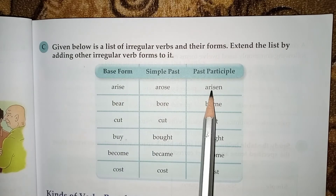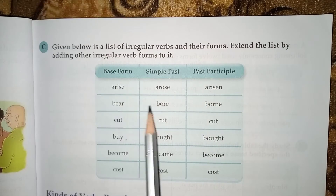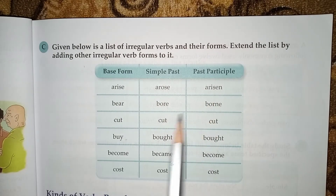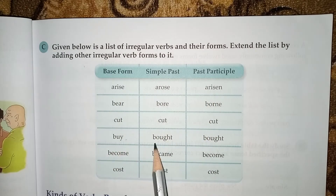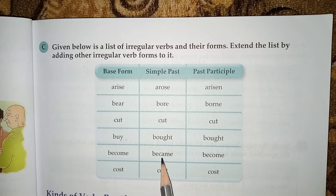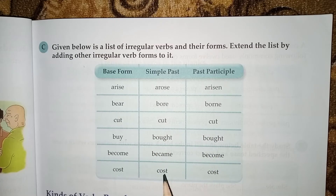Examples of irregular verbs: arise, rose, arisen; bear, bore, born; cut, cut, cut; buy, bought, bought; become, became, become; cost, cost, cost.